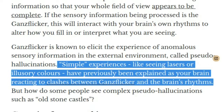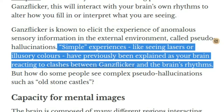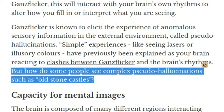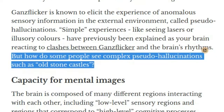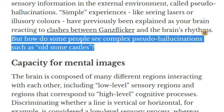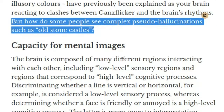Simple experiences, like seeing lasers or illusory colors, have previously been explained as your brain reacting to clashes between GANs flicker and the brain's rhythm. But how do some people see complex pseudo-hallucinations such as old stone castles?